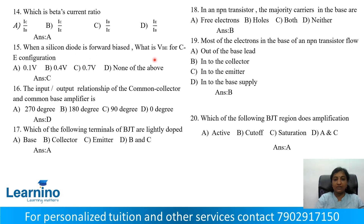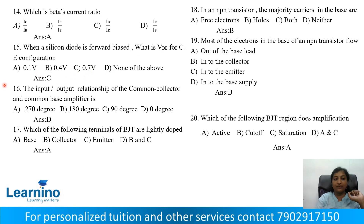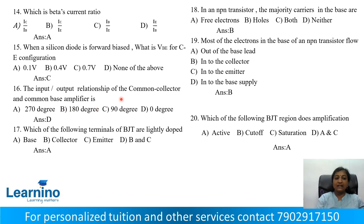Question number 15: When a silicon diode is forward biased, what is VBE in CE configuration? The forward biased VBE voltage — correct answer is Option C: 0.7 volts. Question number 16: The input-output relationship of common collector and common base amplifier.